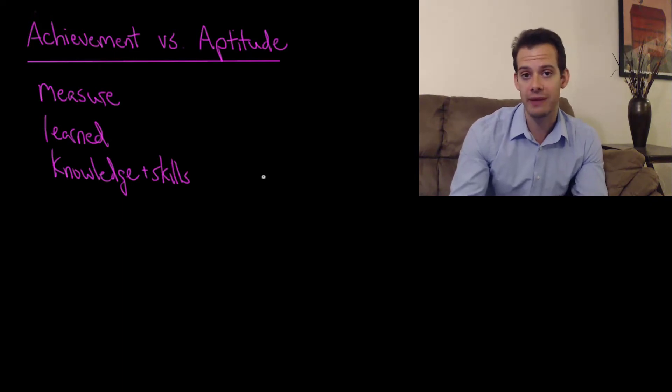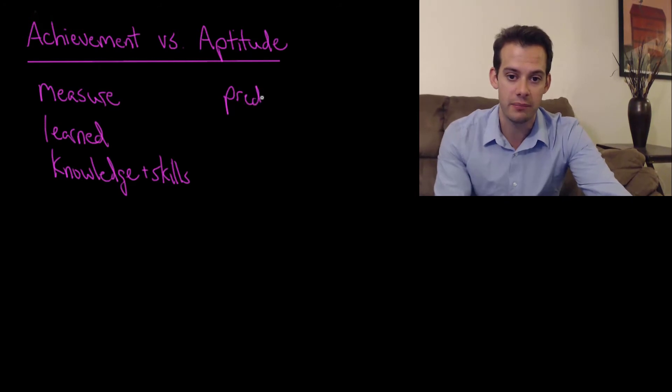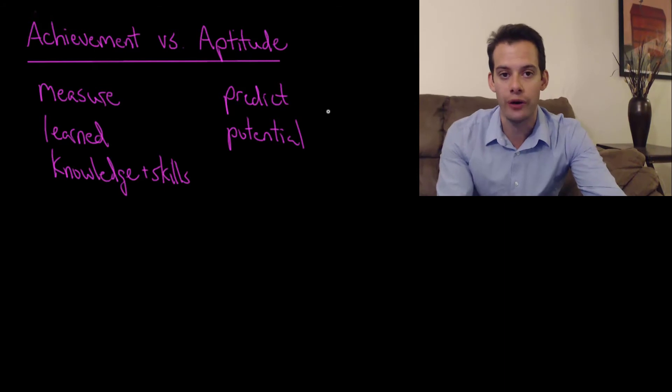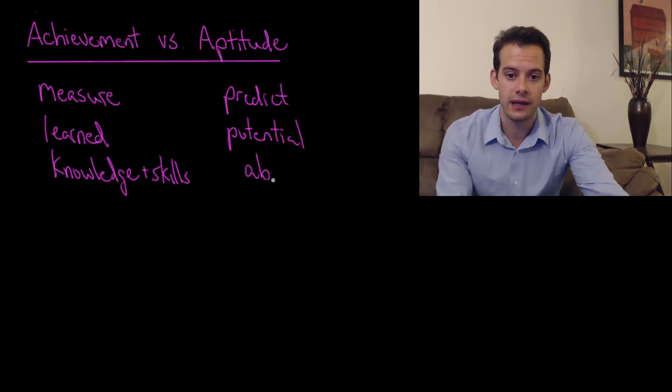And this is different from an aptitude test because what an aptitude test tries to do is predict potential ability. So it's not testing what you know now, it's testing what's your capacity to learn things in the future. And this is really what we're looking for in an IQ test.